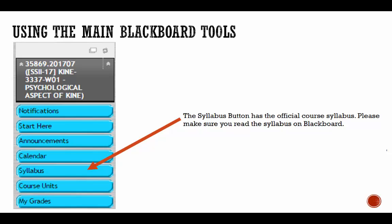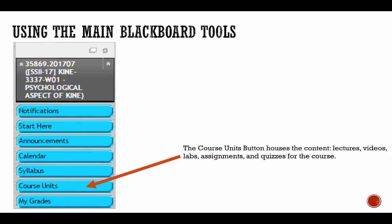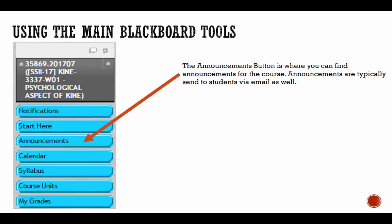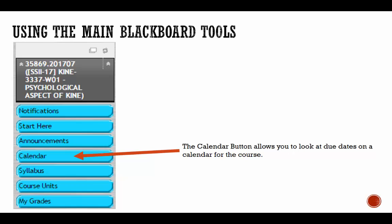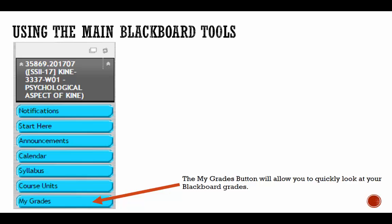The 'Syllabus' button has the official course syllabus — the one listed on Blackboard is the official version, so please make sure you have read it and know your expectations. The 'Course Units' button houses content including lectures, videos, assignments, quizzes, and examinations. The 'Announcements' button is where you can find course announcements, which are typically sent to students via email as well. The 'Notifications' button is the home location of Blackboard and shows upcoming due dates. The 'Calendar' button lets you view due dates on a calendar, and the 'Grades' button allows you to quickly look at your Blackboard grades.